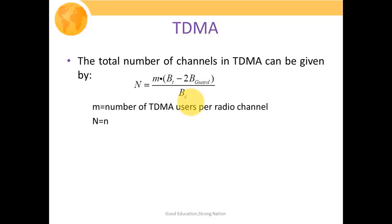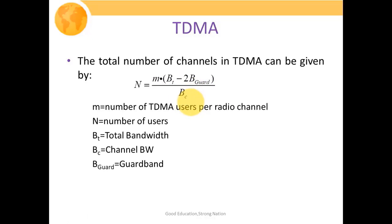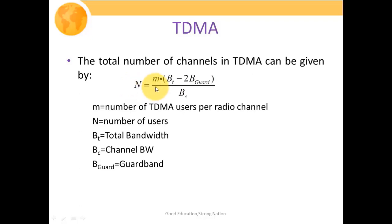Observing this expression, (BT − 2B_guard) / BC is nothing but the number of users in your FDMA channel. So the total number of users in TDMA (capital N) equals m times the total number of users in FDMA. By this we can easily conclude that the capacity of a TDMA system is much larger in comparison to an FDMA system.